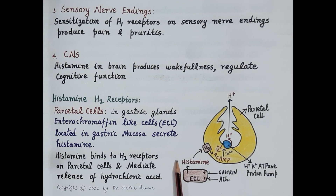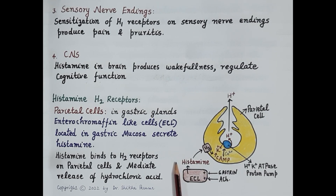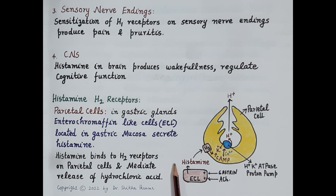H2 antagonists are used in the management of gastroesophageal reflux disease, gastritis, and in the management of gastric ulcers. That is a brief overview of the pharmacology of histamine. If you find the video useful, please like, subscribe, and share. Thanks for watching.